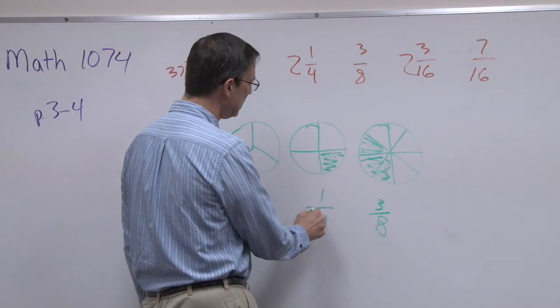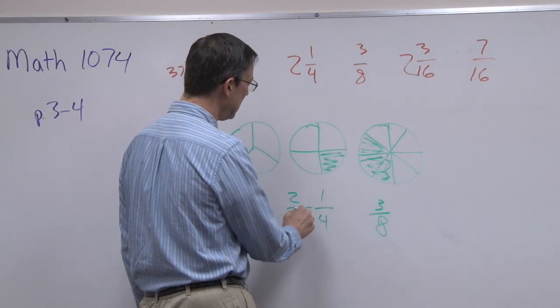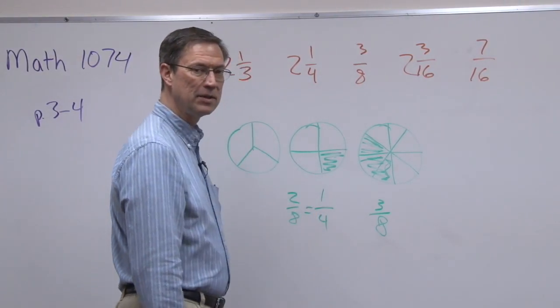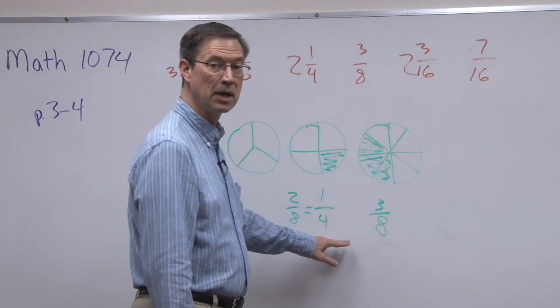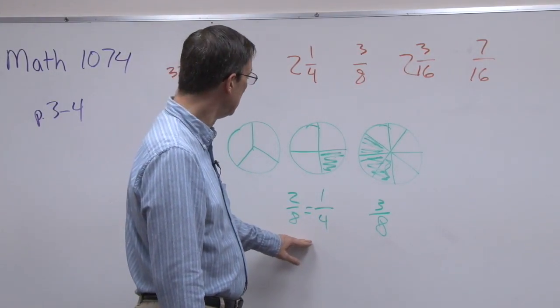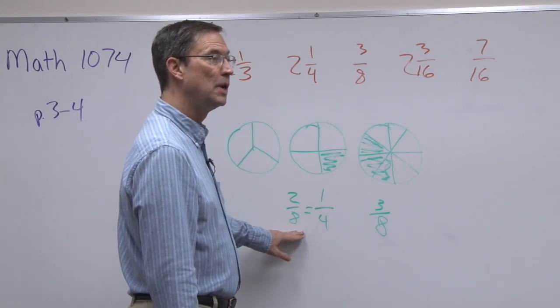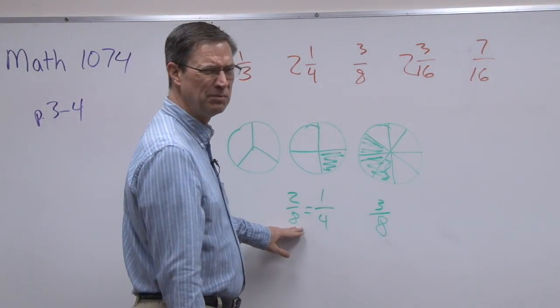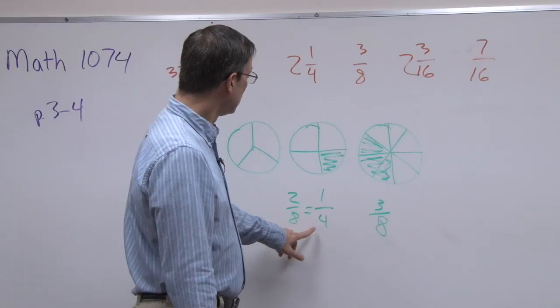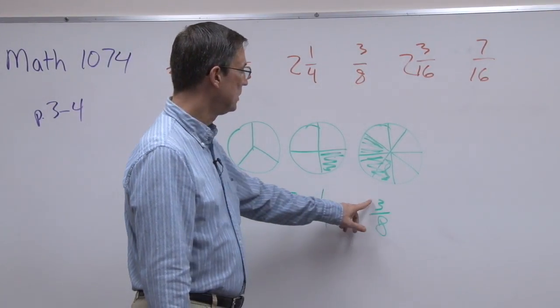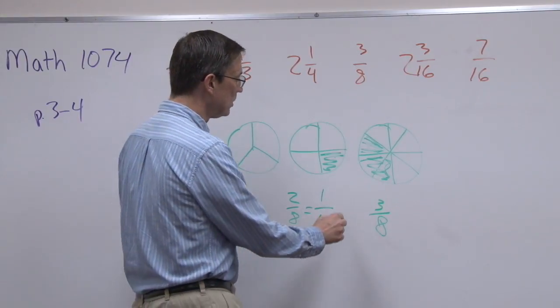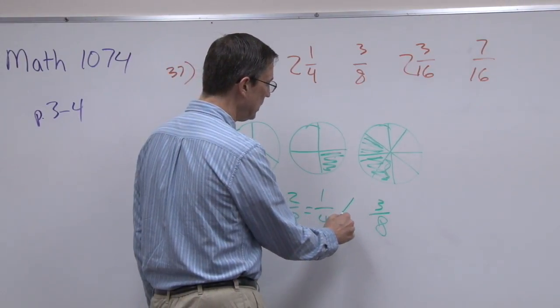So we can say that one fourth is the same as two eighths. I've gotten now the same denominator. We call that the least common denominator, the LCD, which happens to be the least common multiple. Same thing. So they have the same denominator now, eight. Now I can compare two eighths with three eighths. And so the symbol that I'll draw between here is the less than symbol.